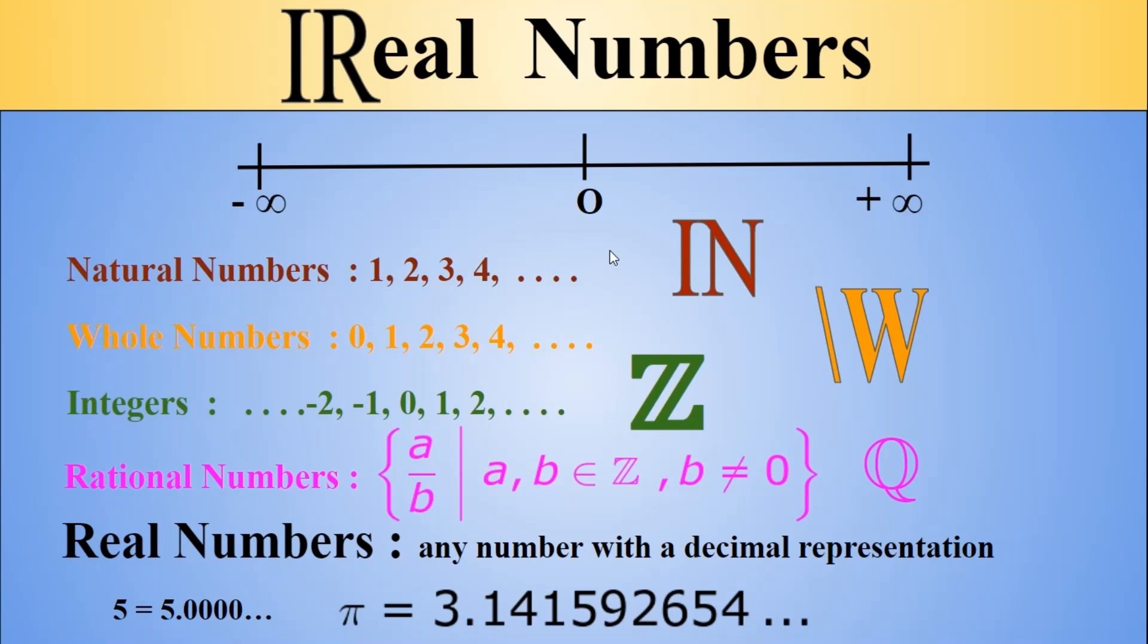Say for example 1 half which is nothing but 0.5. 1 third is 0.3333 recurring decimal. So, we can always, always, always, you can sue me and I am not dividing it by zero, we are turning a rational number into a real number and you get everything along the way as it is.